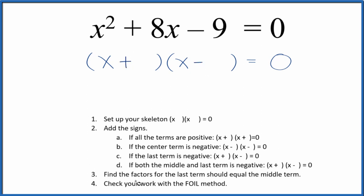Once we have that, we can find the factors for the last term. That's this 9 up here. And they should add together to give us the middle term. So let's write the factors for 9. And that's really it.